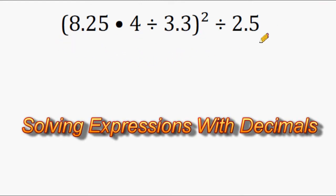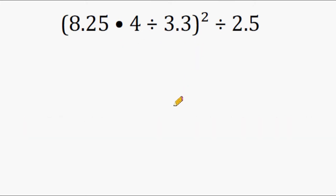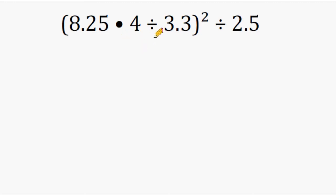We have a math expression here that we have to solve and get one value at the end. Following the order of operations, we have to do what's inside the parentheses first. But sometimes you might have more than one thing inside parentheses — in this case we have multiplication and division. When you have multiplication and division in your problem, you must go from left to right.